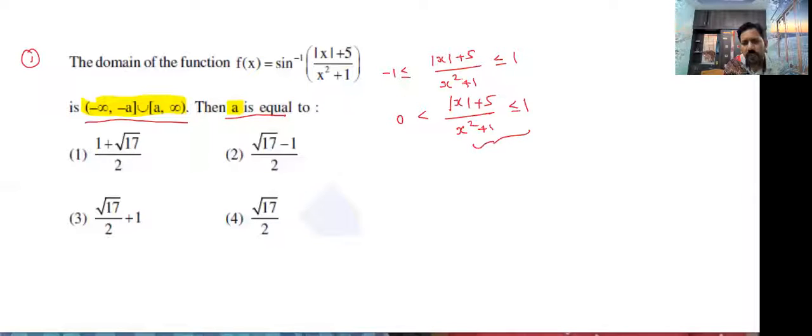So by using these two conditions, take the cross multiplication. Mod x plus phi is less than or equal to x square plus one. Both are same. Now left hand side values and right hand side, finally mod x square minus mod x minus 4 greater than or equal to 0.